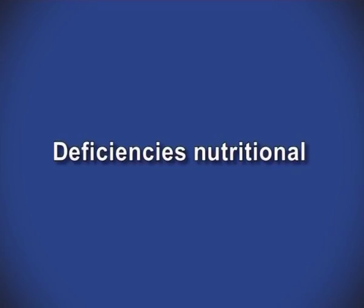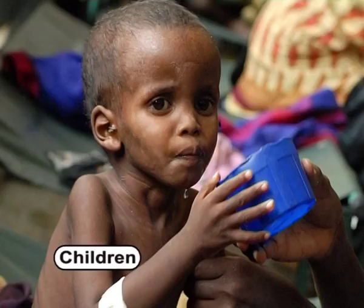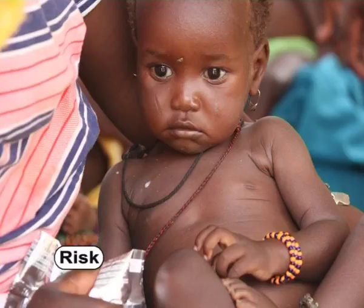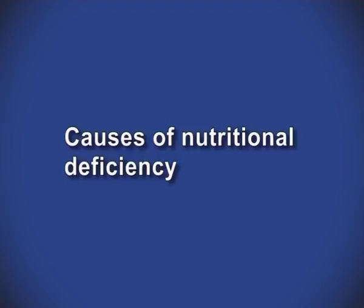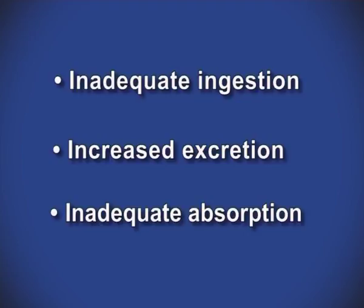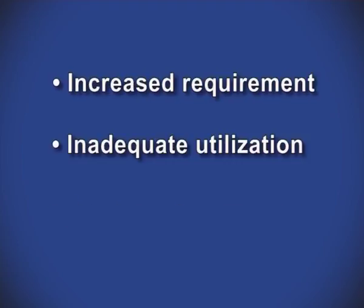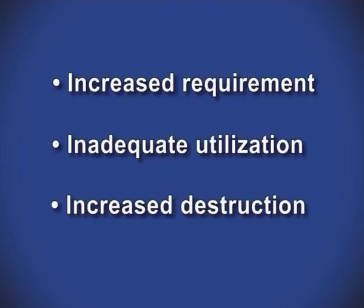Nutritional deficiencies, known as malnutrition, are the result of our body not getting enough of the nutrients it needs. Children are more at risk for serious complications due to nutritional deficiencies than adults. Deficiencies can lead to a variety of health problems. Causes of nutritional deficiency include inadequate ingestion, increased excretion, inadequate absorption, increased requirement, inadequate utilization and increased destruction. Any one or combination of these may result in nutritional deficiency.